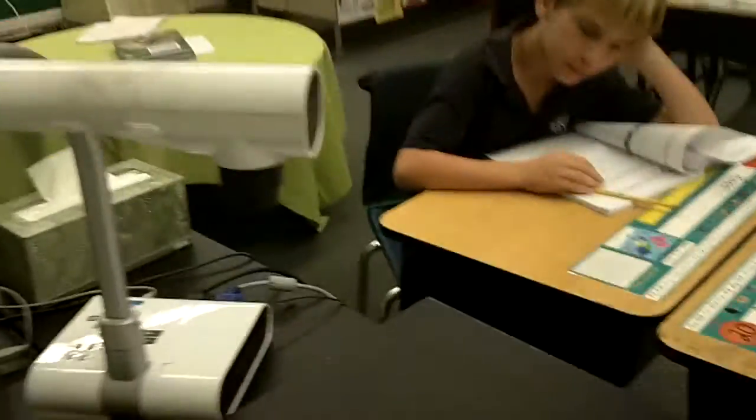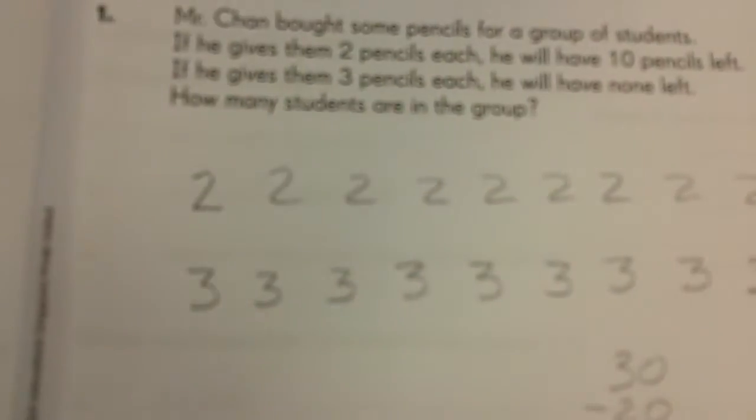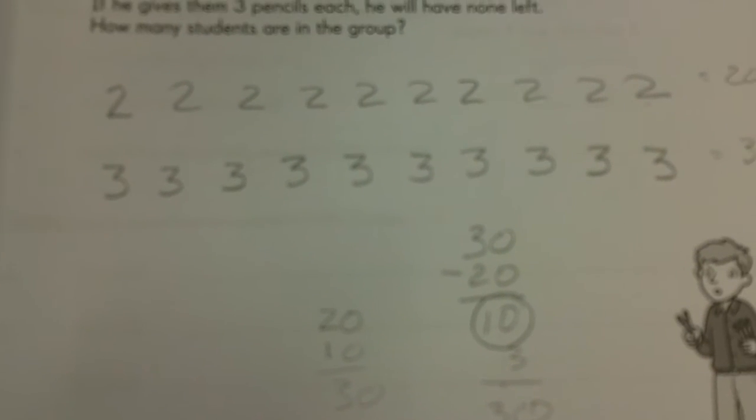No? Okay. So we've got the dot way. And then we have the listing, the two, two, twos, and the threes, like Caleb described. Thank you.